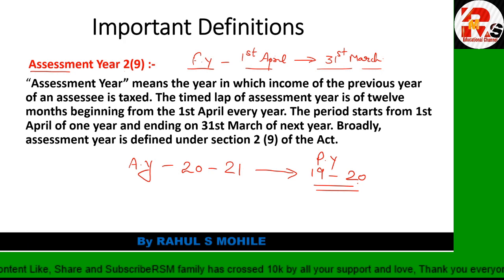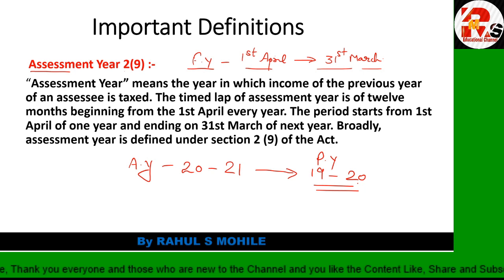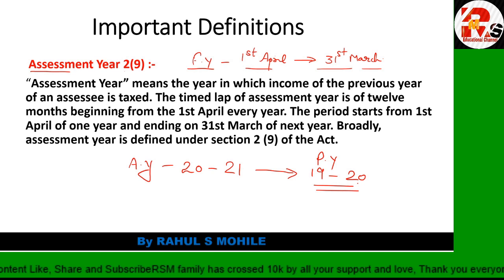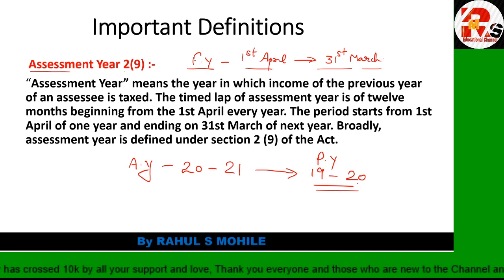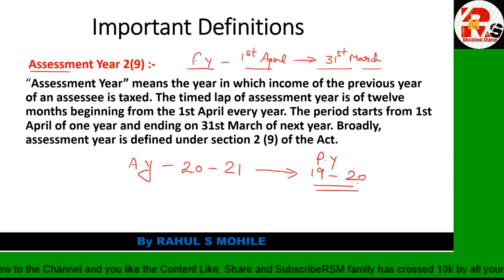In income tax, you need to keep track of two years: assessment year and previous year. Previous year is the year prior to the assessment year. Assessment year is the financial year starting from 1st April and ending on 31st March. Whatever money I earn this year, I will pay its tax next year. Whatever income I earned last year, I am paying its tax this year. Assessment year is defined under Section 2(9) of the Income Tax Act. Person is under Section 2(31) — these sections are very important to remember.